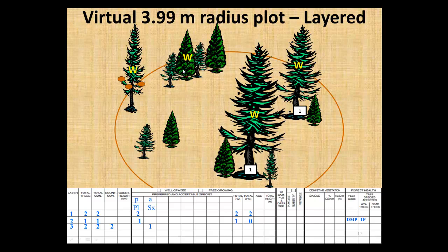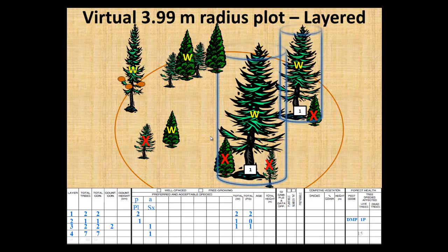We're not nesting at all - there are no caps for each layer. We've got seven layer fours but only one well-spaced, because one is too close to the pine and susceptible to mistletoe. Others can't be accepted because they're within the drip line - the drip line cylinder discounts individuals underneath the growing space of those stems. So we end up with only one layer four in the plot.